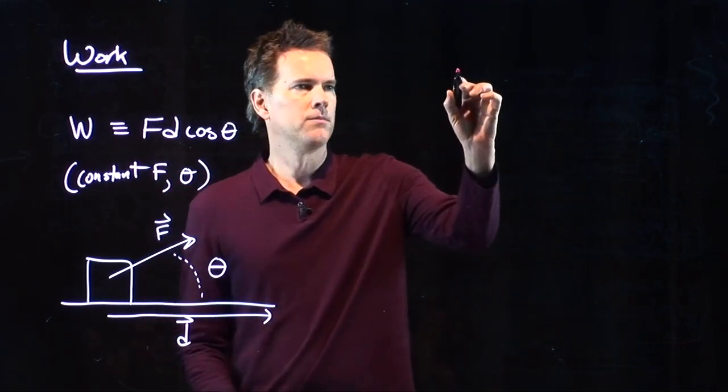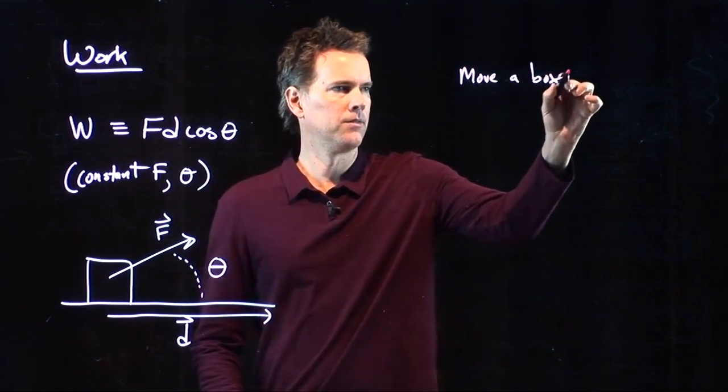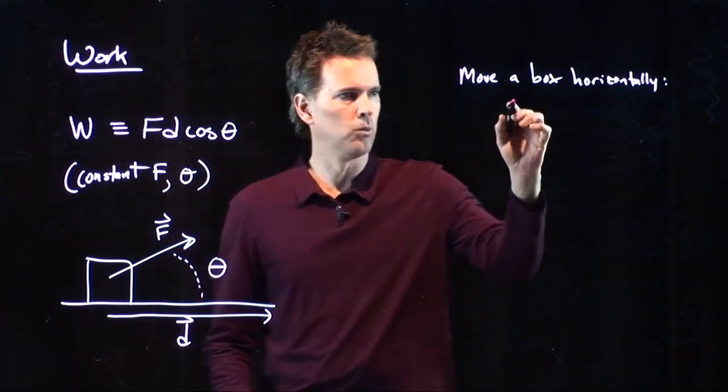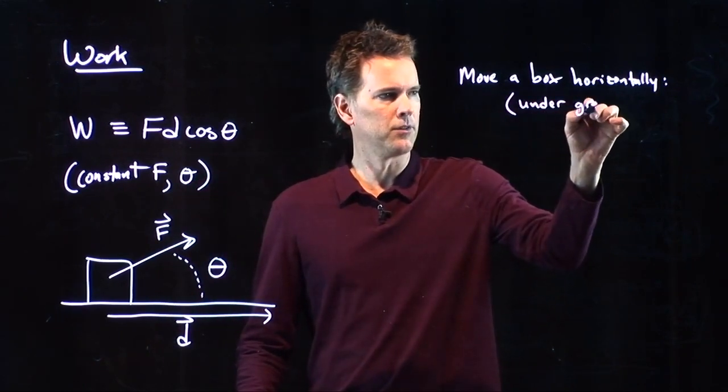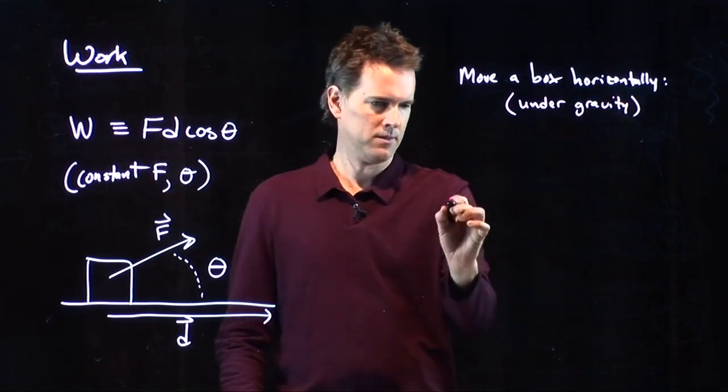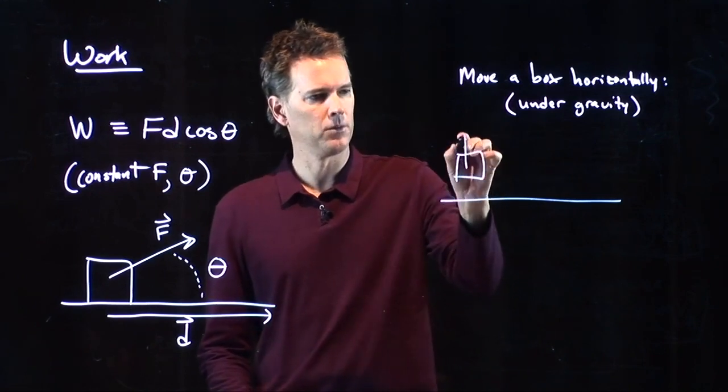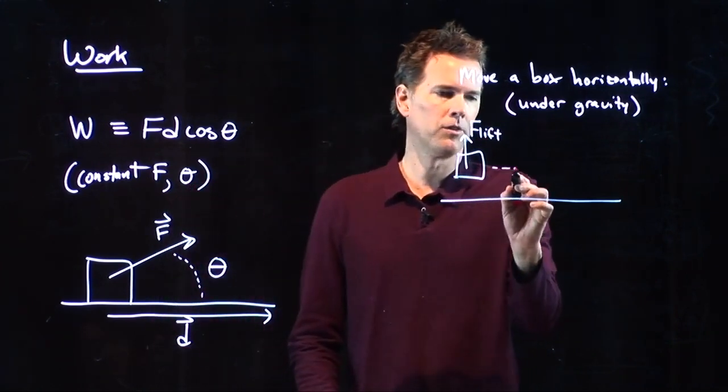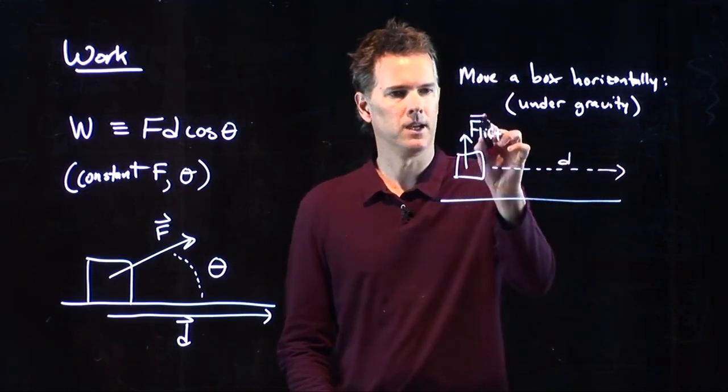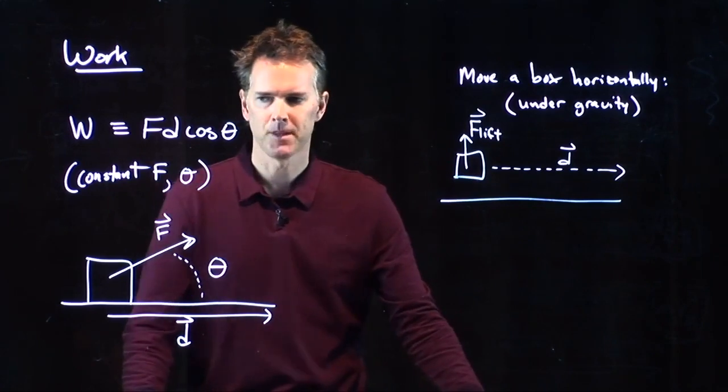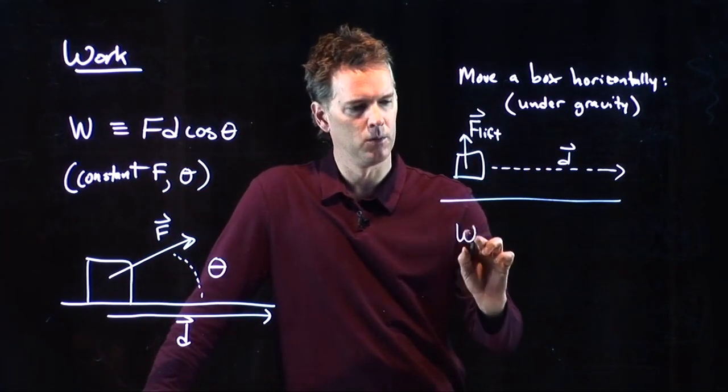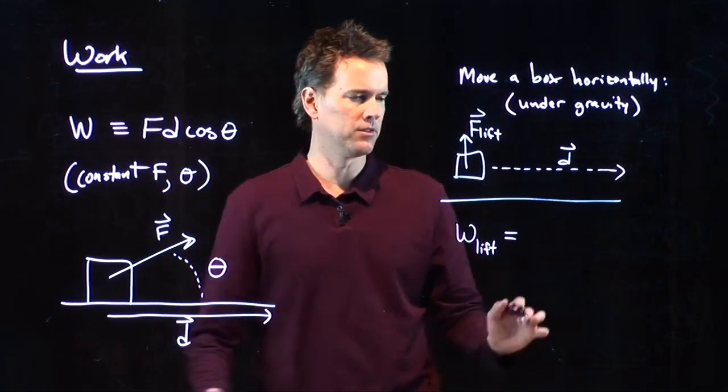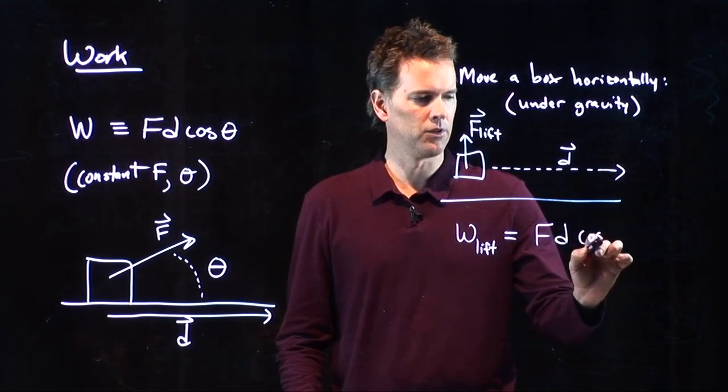So let's see if we can understand how this applies to real world problems. Let's say that you move a box horizontally. What does our picture look like? Here's our box. We have to hold it up against gravity. And we're going to move this thing horizontally a distance D. Those are both vectors. Let's calculate the work that is required to do that. The work that we have to do, our lift force over that distance is going to be F D cosine theta.